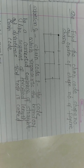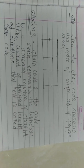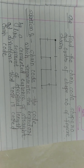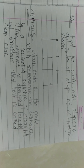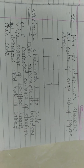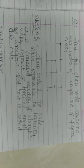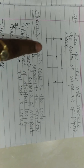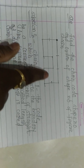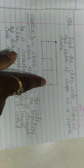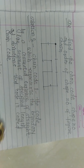Let us see the numerical on the chain code. The question is: find the chain code, shape number, and order of shape number of the given figure. Here a figure is given — we have to find the chain code of this figure, and the shape number and order of the shape number.